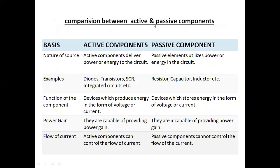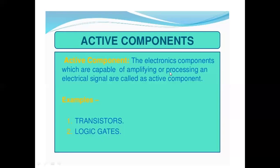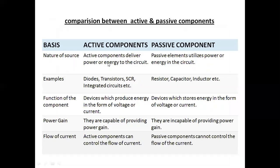I explained here a comparison between active and passive components. The first comparison point is nature of source. Active components deliver power or energy to the circuit, and they are capable of amplifying or processing electrical signals. Passive components, on the other hand, utilize power or energy in the circuit. That is the basic difference between active and passive components in terms of nature of source.